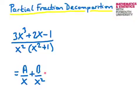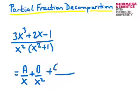The next term we look at is a quadratic term — it's an irreducible quadratic, this cannot be factorised. So therefore we write down plus (cx + d) / (x² + 1). And this is our partial fraction decomposition.